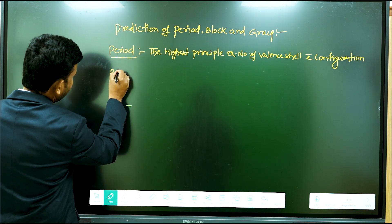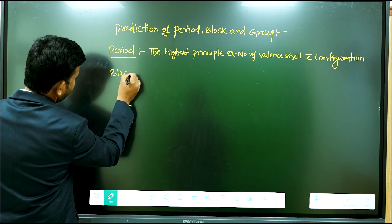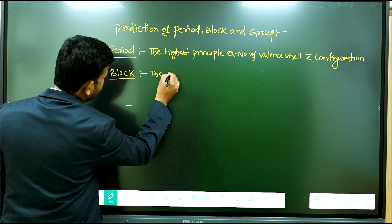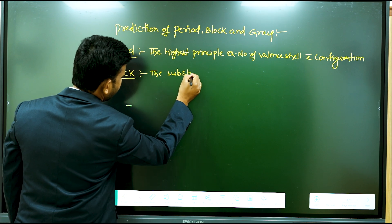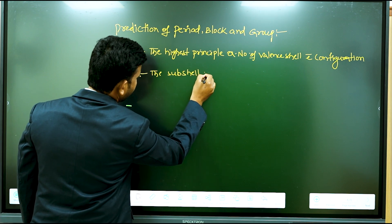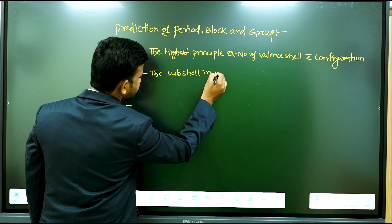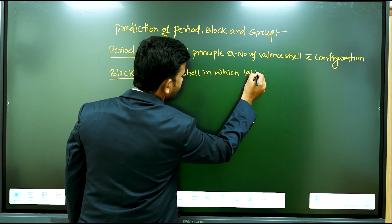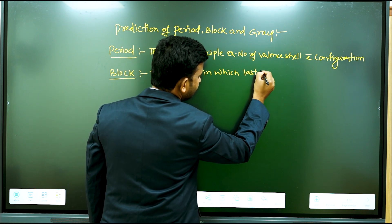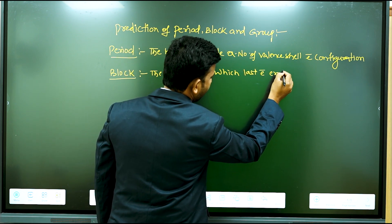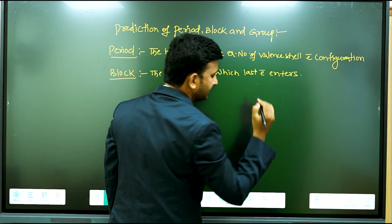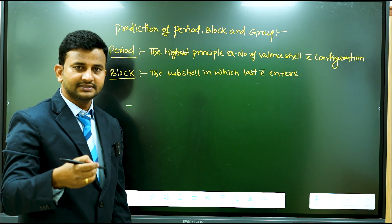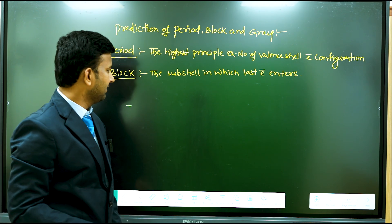Block. The last electron enters a particular sub-shell — s, p, d, or f — and whichever sub-shell the last electron enters, that determines the block.